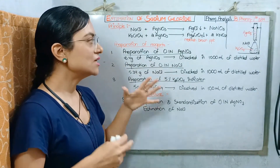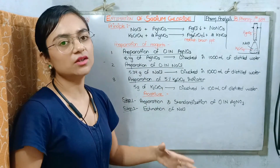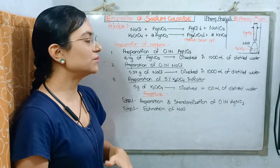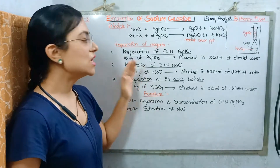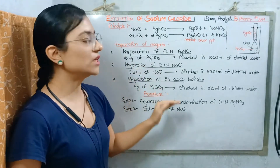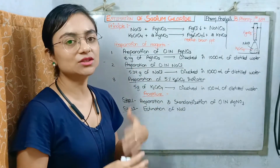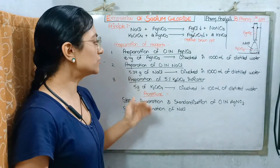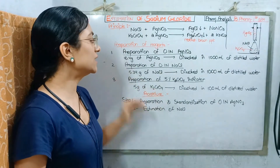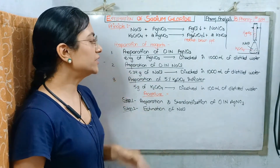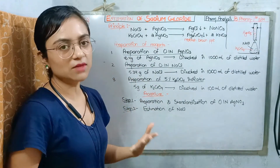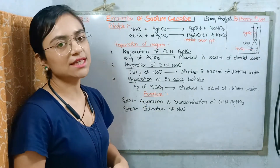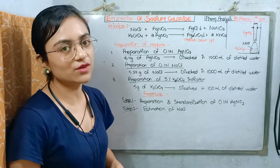After preparing 0.1 N AgNO3, the second reagent is 0.1 N sodium chloride solution. For that, we will take 5.34 grams of NaCl and dissolve it in 1000 ml of distilled water.